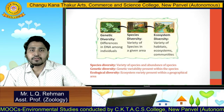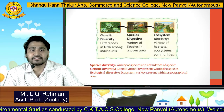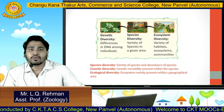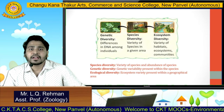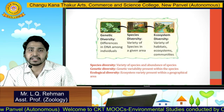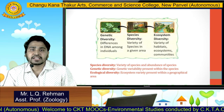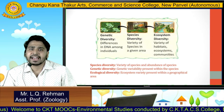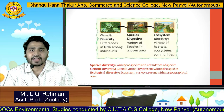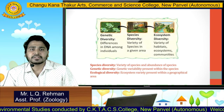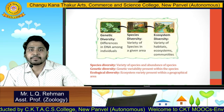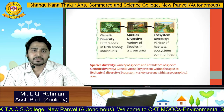There are three types: genetic diversity, species diversity, and ecosystem diversity. Differences in DNA among individuals is what we call genetic diversity. Species diversity is the variety of species in a given particular area. Ecosystem diversity is the variety of habitats, ecosystems, and communities. These three topics we will study separately in brief in different video lectures.